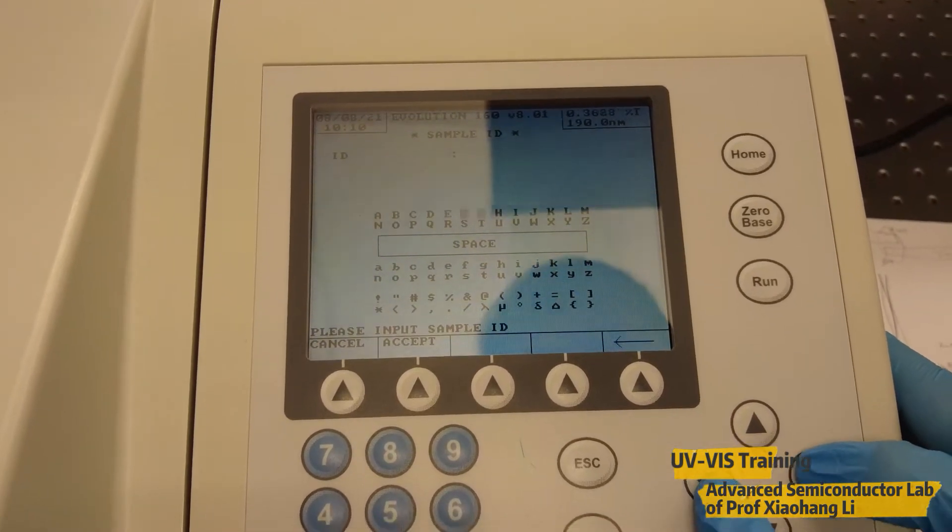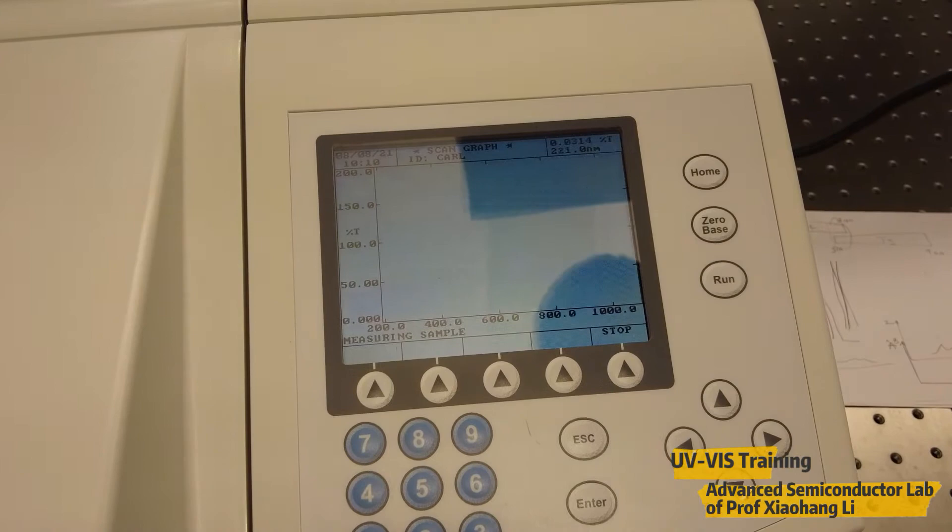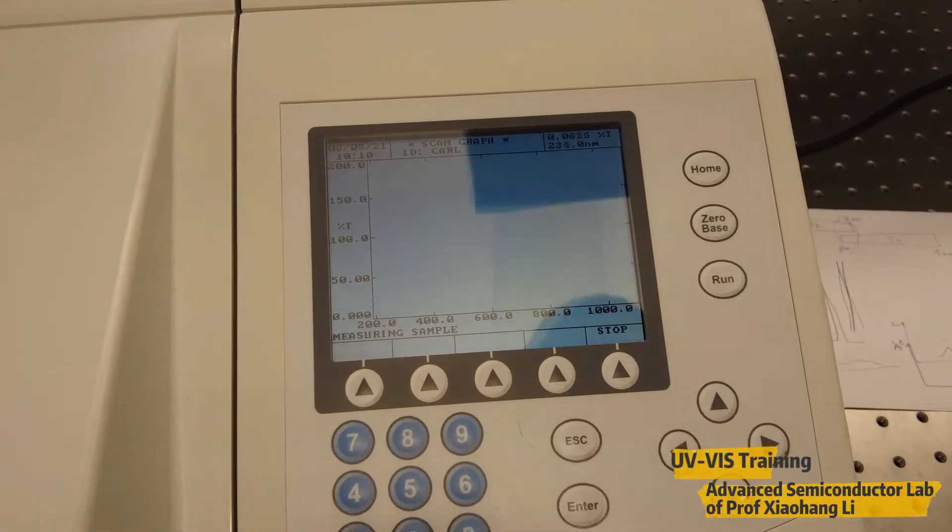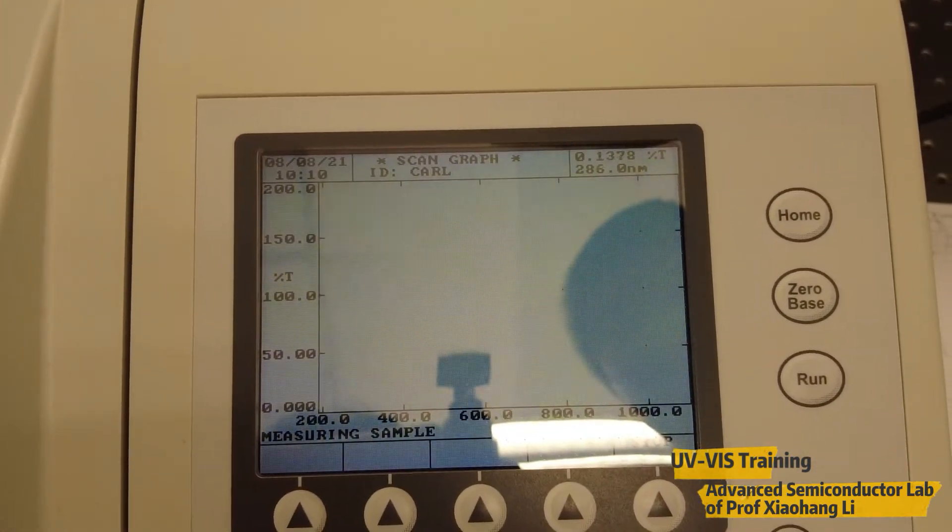We'll give a name. Here we give it as gallium nitride. Then we'll accept. During the measurement it will show the real-time curve. Here it starts to change the wavelength of the incident light.